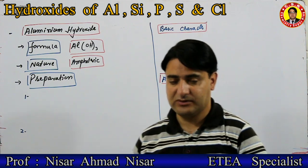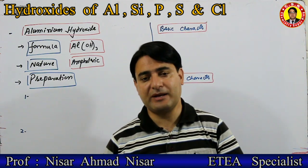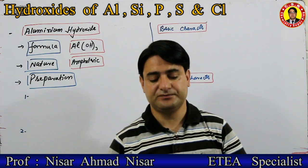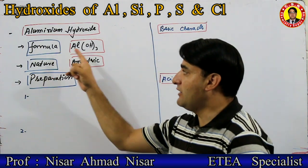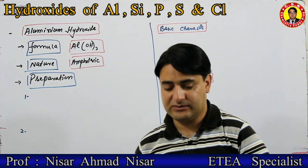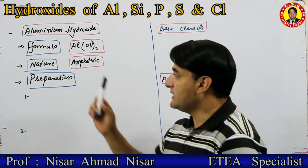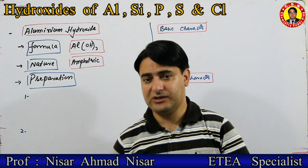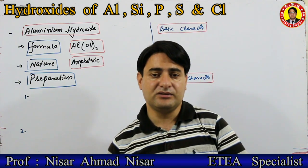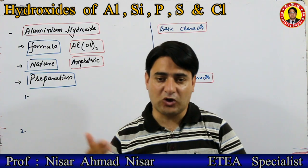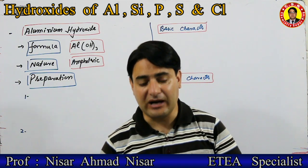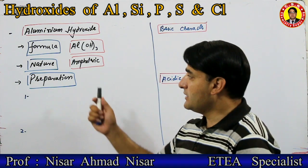سب سے پہلے بات کروں گا aluminium hydroxide کے اوپر۔ Aluminium hydroxide کا فارمولہ ہوتا ہے Al(OH)₃۔ Aluminium hydroxide کی جو nature ہوتی ہے — یعنی aluminium hydroxide acid کے ساتھ base کے طور پر کام کرے گا اور base کے ساتھ acid کے طور پر کام کرے گا۔